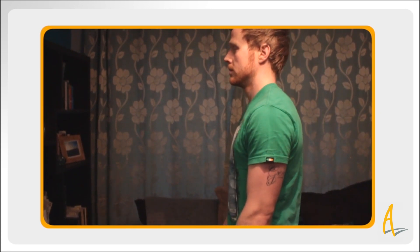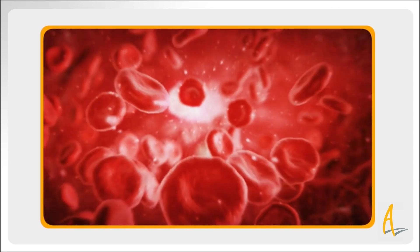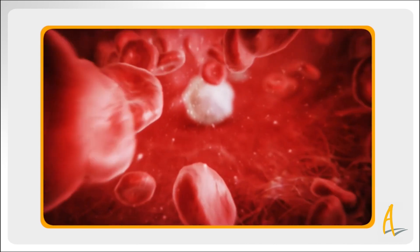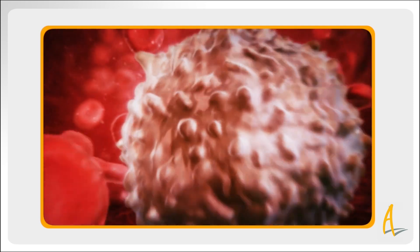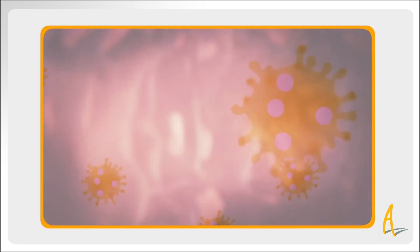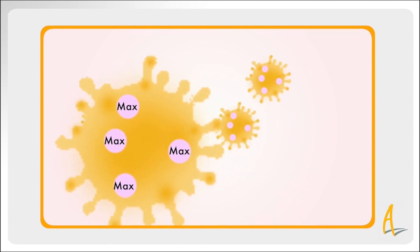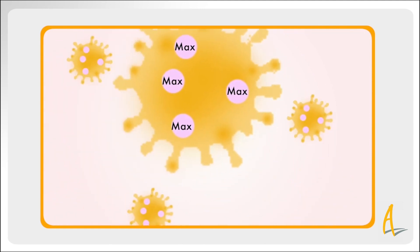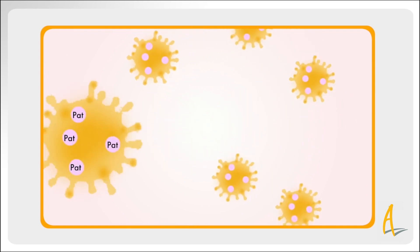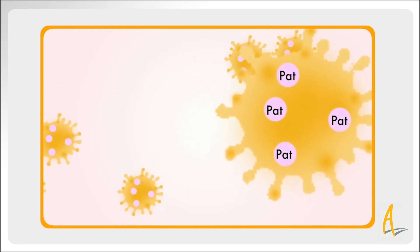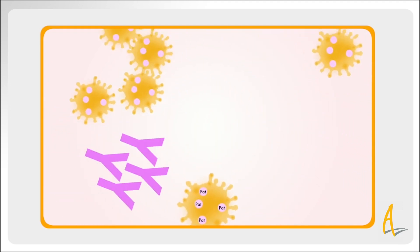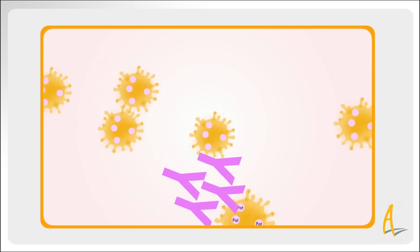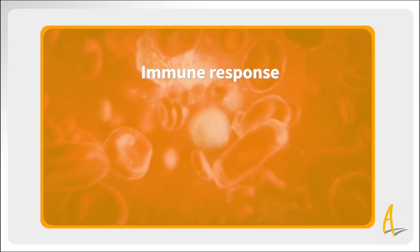Our immune system protects us from bugs, bacteria and viruses. In simple terms, all cells have a substance on their surface called antigens, and all cells in your body have the same surface antigens. It's as if they're all wearing a name badge with your name on it, so that your body knows that these cells are not invaders from outside. If a cell is found in your body with a different antigen or name badge — an intruder, like a bacteria or a virus — your immune system will produce antibodies and killer cells to attack it. This attack is called an immune response.